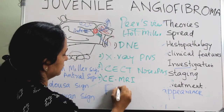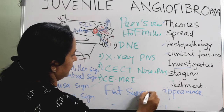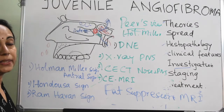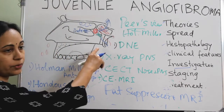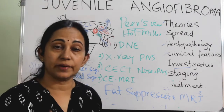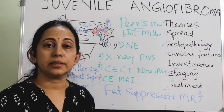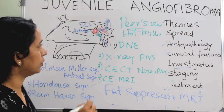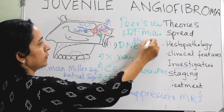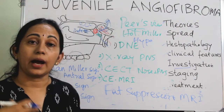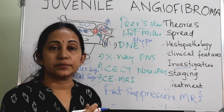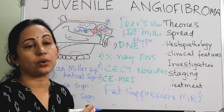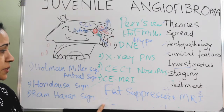Fat suppression MRI can also be done. The basis is that the pterygoid wedge normally contains fat-rich marrow, so it should appear hypointense on fat suppression MRI. But when there is iso-intensity or hyperintensity, it means the pterygoid wedge has already been eroded or invaded by JNA. In that case, drilling or removal of the pterygoid wedge is required — that is the importance of fat suppression MRI.